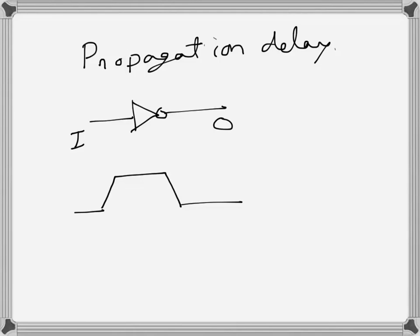Let's talk about the propagation delay in a gate. This is an inverter, and the propagation delay is the time difference between a particular point in the input and the output. The output will of course go low here, and ideally it should happen immediately.